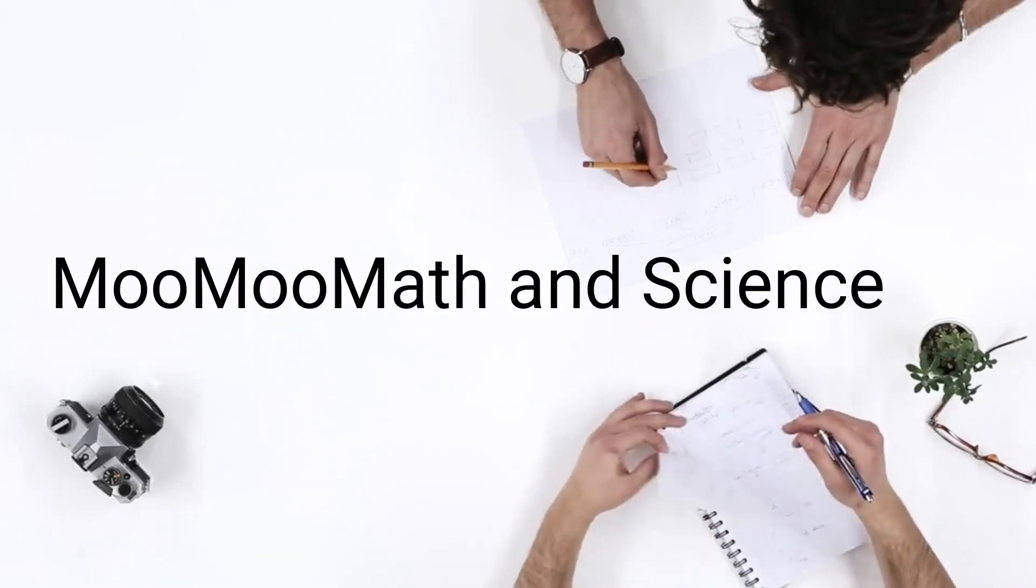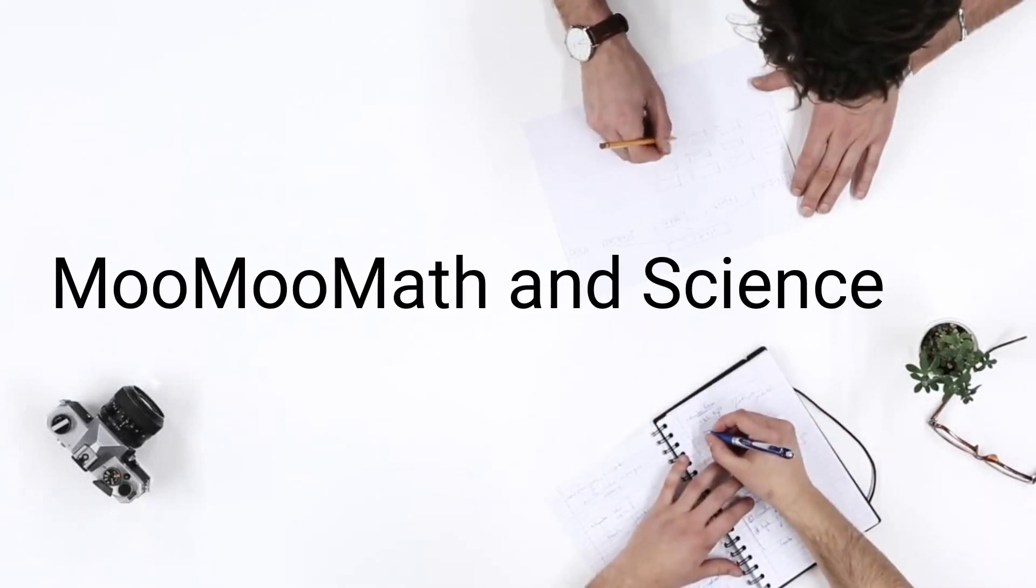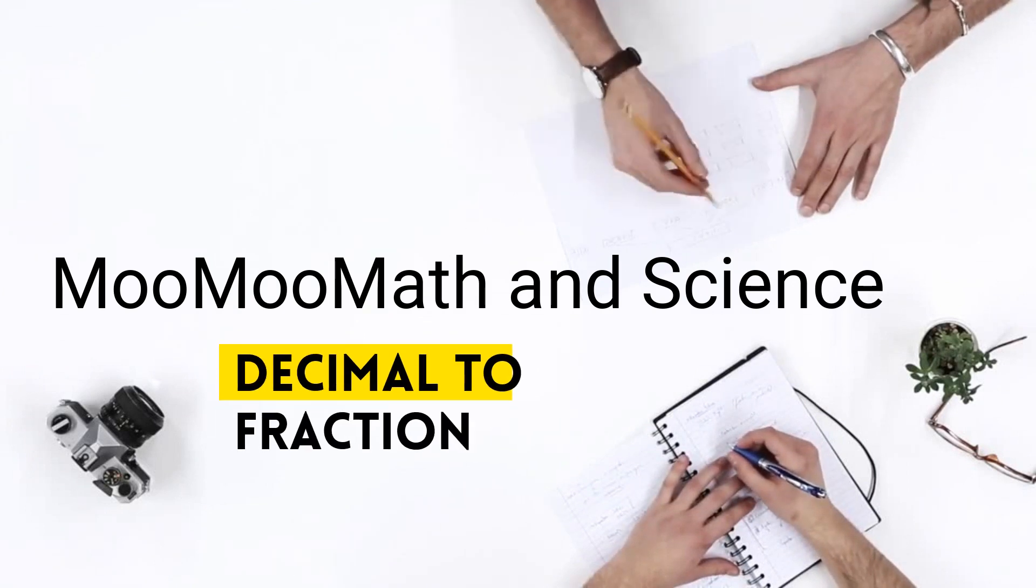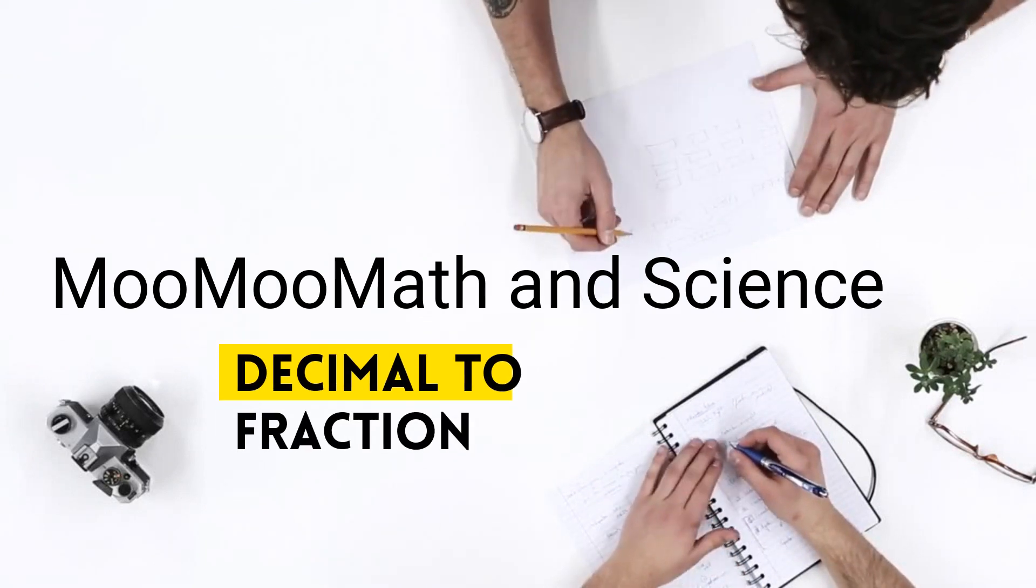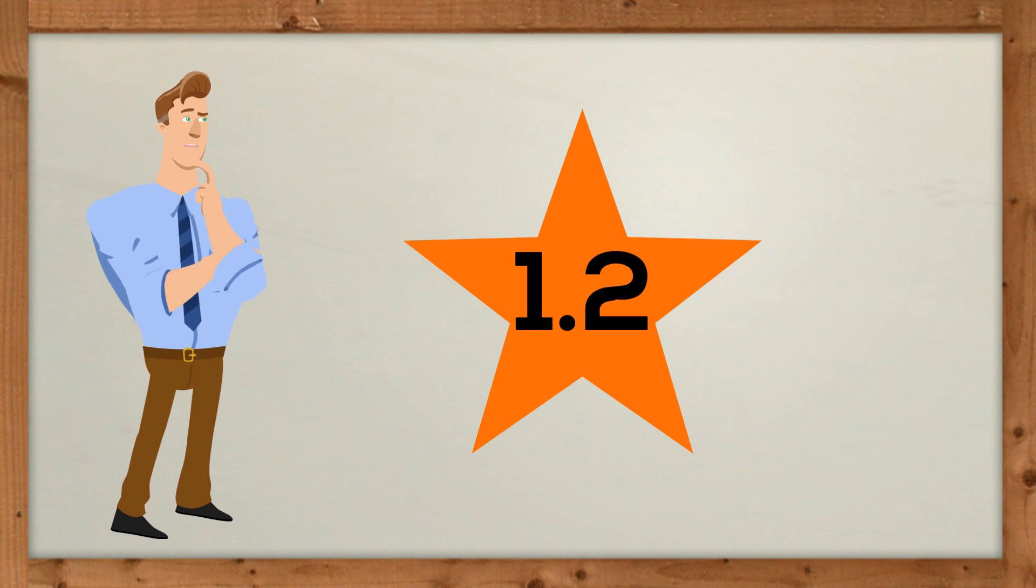Welcome to Moo Moo Math and Science. In this video, I'd like to show how to convert a number with a decimal into a fraction. For example, if you have a number like 1.2, how do you convert that into a fraction?